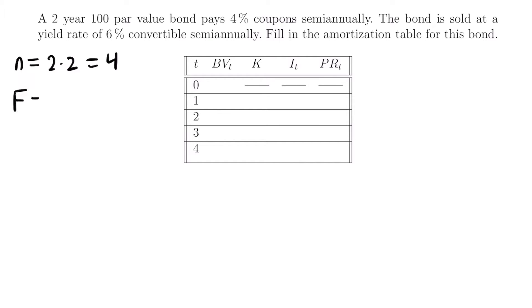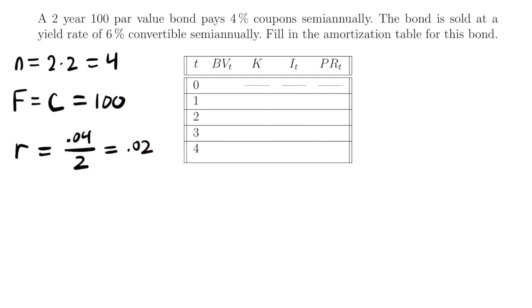F is the face value and C is the redemption amount. The bond pays a 4% coupon semi-annually, so the nominal coupon rate is 4% convertible semi-annually. To get the actual coupon rate R, we divide by two: 0.04 divided by 2 equals 0.02. We do the same for the yield rate — the bond is sold at 6% convertible semi-annually, so J equals 0.06 divided by 2, which equals 0.03.